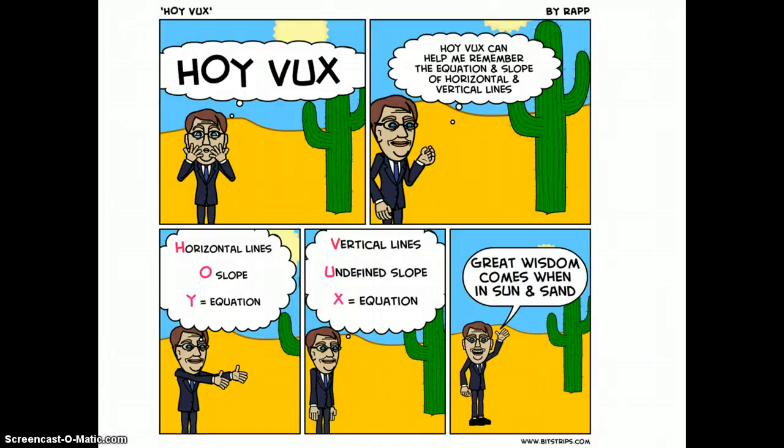Horizontal lines: zero for slope, y for an equation. Vertical lines: undefined slope, and then x for an equation.